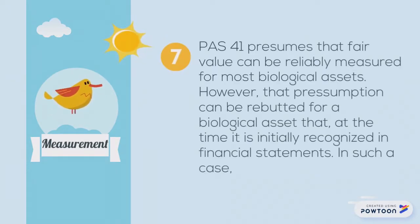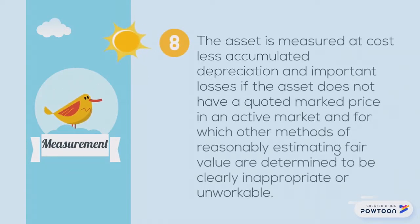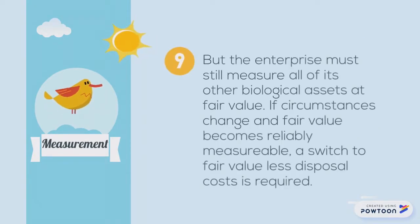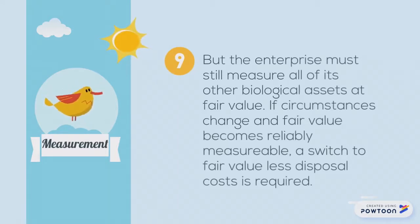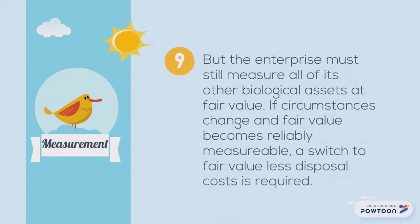PAS 41 presumes that fair value can be reliably measured for most biological assets. However, this presumption can be rebutted for a biological asset that, at the time of initial recognition, has no quoted market price in an active market and for which other methods of reasonably estimating fair value are determined to be clearly inappropriate or unworkable. In such cases, the asset is measured at cost less accumulated depreciation and impairment losses. If circumstances change and fair value becomes reliably measurable, a switch to fair value less disposal cost is required.